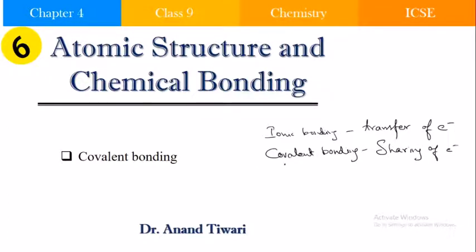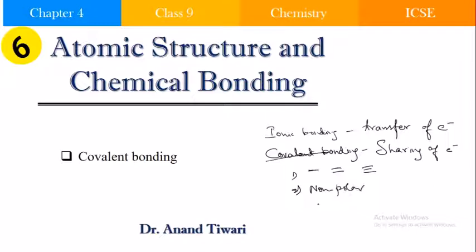We also saw that in covalent bonding there are three types: single covalent, double covalent, and triple covalent bonding. They are also classified as non-polar and polar covalent bonding.